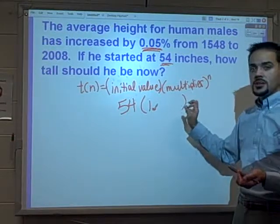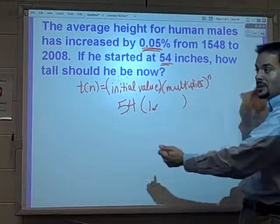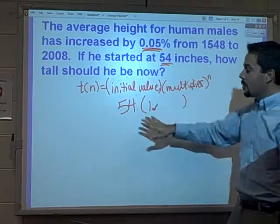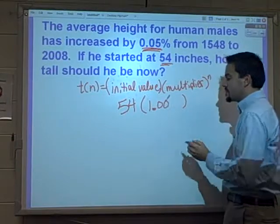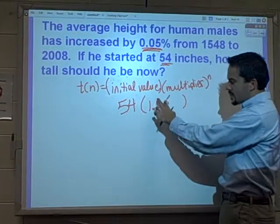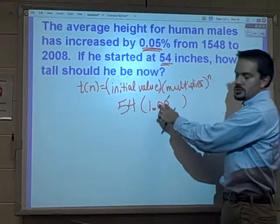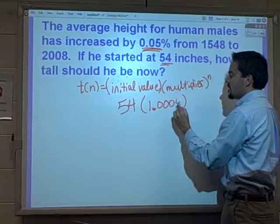If I didn't have anything else here, it would just say we've stayed at 54 inches, because it would be 1 times 1 times 1 times however many ones I'm going to line up after it. But it would still be at 54 inches. So to get that little bit of growth, I've got to add on a couple of zeros.